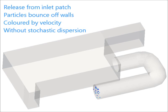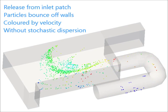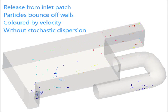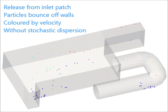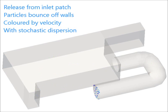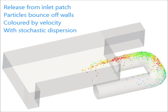To simulate the transient effect of turbulence on the particle tracks when using a steady-state flow solution, we can use a stochastic dispersion model. Here, we compare the results of the same case without and with stochastic dispersion. The particles are coloured by their velocities and are set to bounce off the walls. With the stochastic model switched on, the results are more realistic, as the particles spread further in the mixing chamber.